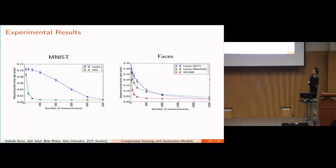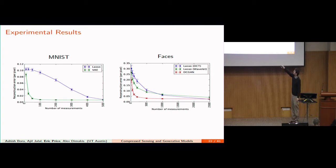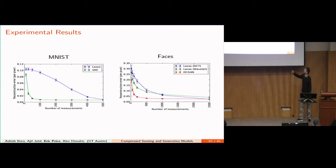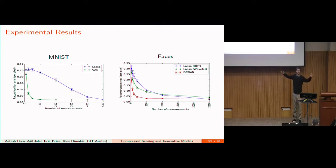Quantitatively, here is the number of measurements required for a given reconstruction error using our approach and LASSO on both MNIST and the faces dataset. There is a fairly wide gap between where our approach starts working well and where the baseline methods don't.